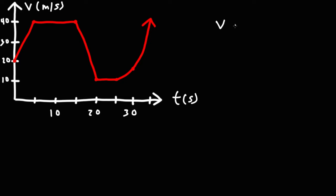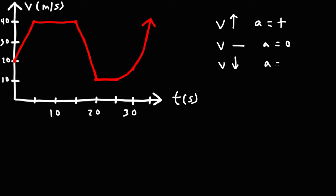Whenever the velocity is increasing, the acceleration is positive. Whenever the velocity is constant, the acceleration is zero. And when the velocity is decreasing, the acceleration is negative.